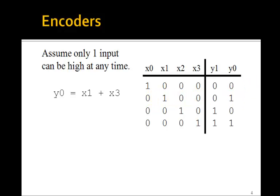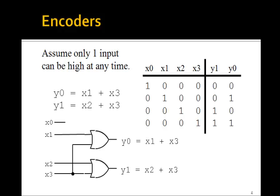For example, y0 is 1 only if either x1 is 1 or if x3 is 1. So we can just say y0 is x1 or x3. Similarly, y1 is 1 if x2 is 1 or if x3 is 1. So this entire encoder just reduces to these two OR gates. y1 is just x2 or x3. y0 is just x1 or x3.